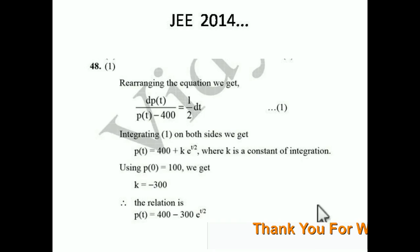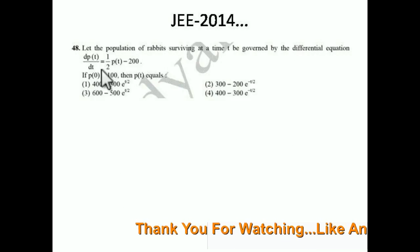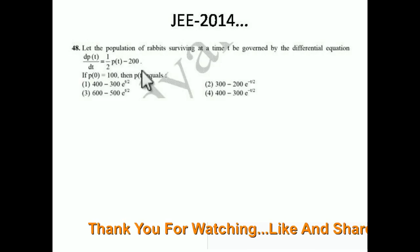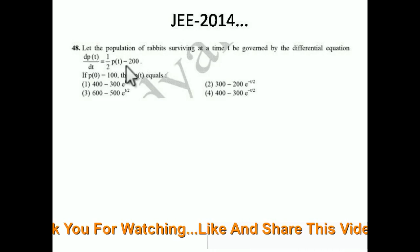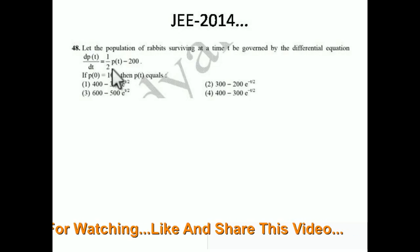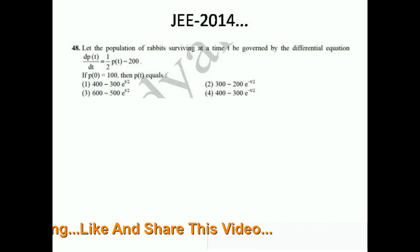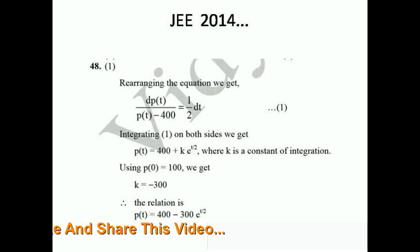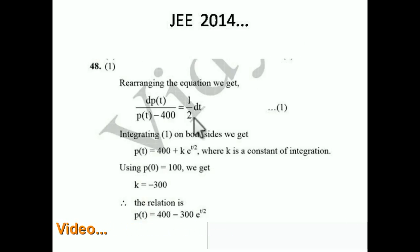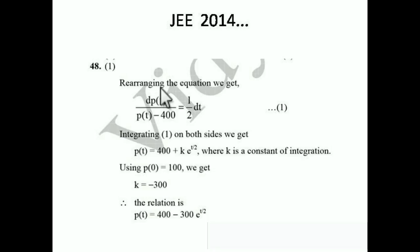We have dp(t)/dt = (1/2)·p(t) − 200. Taking LCM, this becomes [p(t) − 400]/2. Now take p(t) to one side and dt to the other — this is called the variable separable method, where p(t) is one variable and t is another. We all know this basic method.